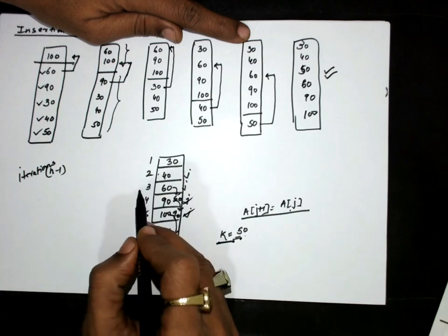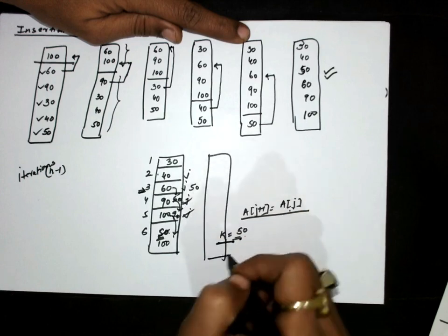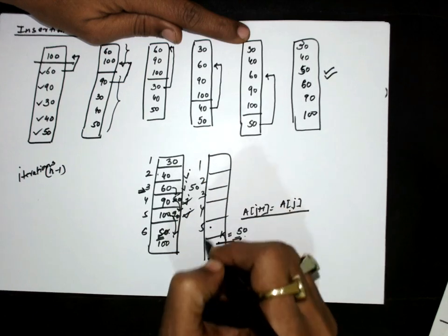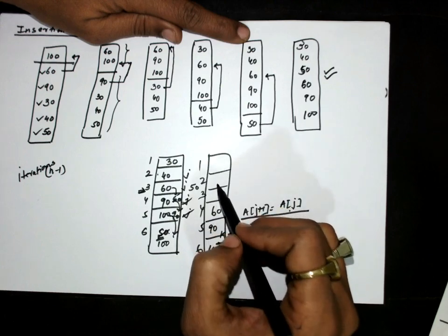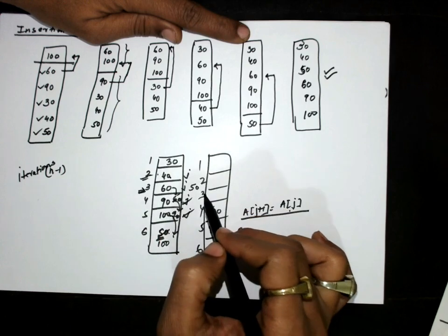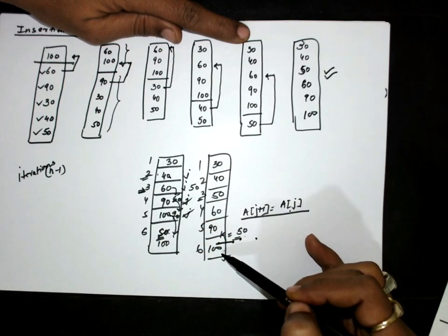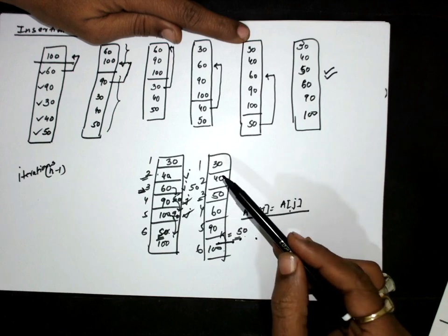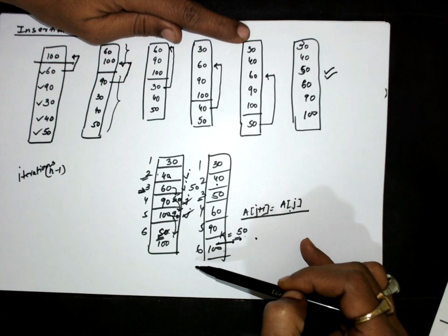If we find that the a[j] element is smaller than k, it means we have found the appropriate position to insert k. The appropriate position of k is the third position, and we insert 50 there. As a result, 100 was shifted to the sixth position, 90 to the fifth, and 60 to the fourth. Since 40 is at the second position and is smaller than 50, we insert k at the third position. We make comparisons going upward, stopping when we find an element smaller than k.